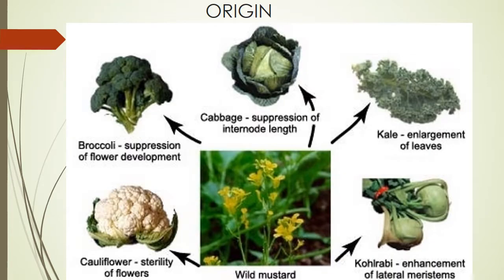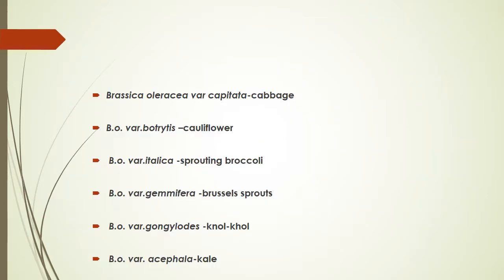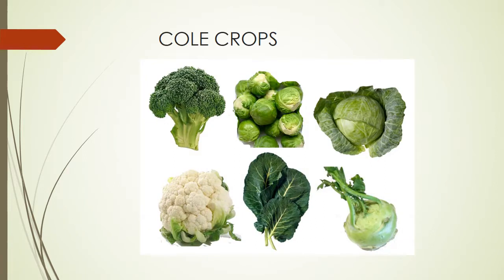is silique. These are different cole crops: wild mustard, kale (enlargement of leaves), knol-khol, cauliflower, broccoli, and finally cabbage. Different types are Brassica oleracea variety Capitata is cabbage, Brassica oleracea variety Botrytis is cauliflower, Brassica oleracea variety Italica is sprouting broccoli, Brassica oleracea variety Gemmifera is Brussels sprout, Brassica oleracea variety Gongylodes is knol-khol, and Brassica oleracea variety Acephala is kale.